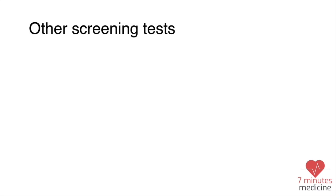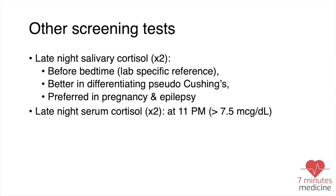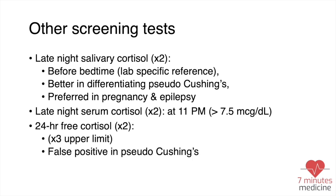There are other screening tests available. Late-night salivary cortisol should be done at least twice before bedtime. It is better at differentiating pseudo-Cushing syndrome and is preferred in pregnancy and epilepsy. Reference ranges differ depending on the lab. Another option is late-night serum cortisol measured at 11 p.m.; if more than 7.5 micrograms per deciliter, it should be repeated twice.